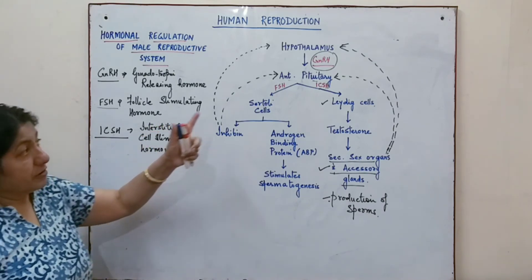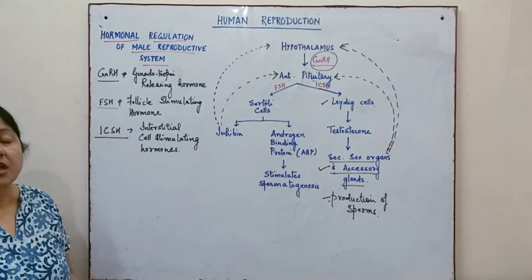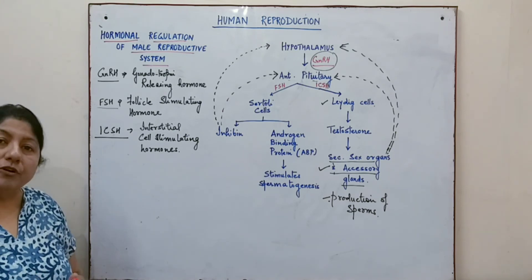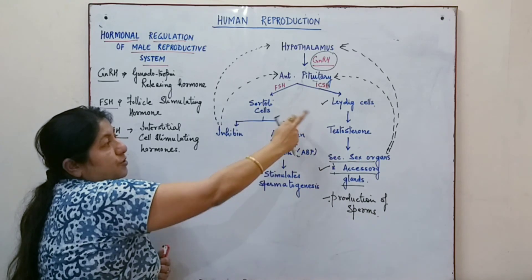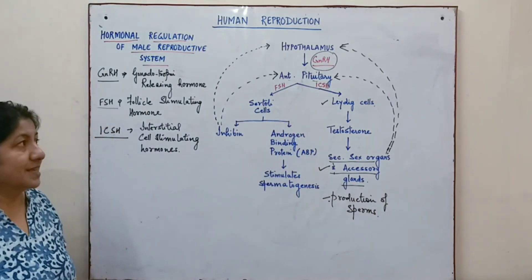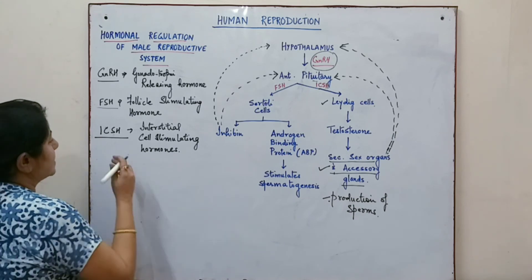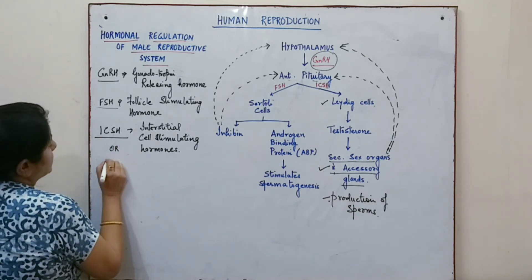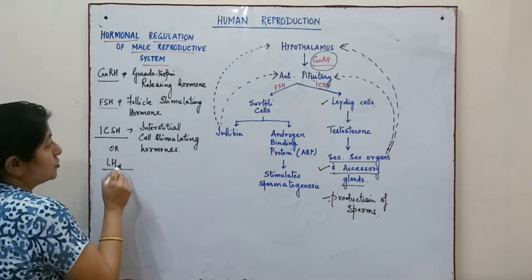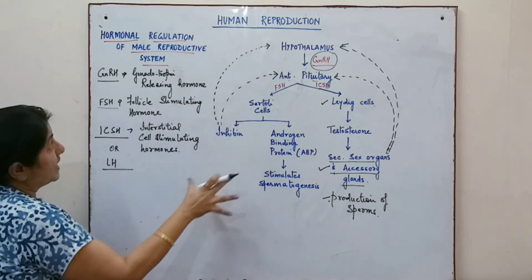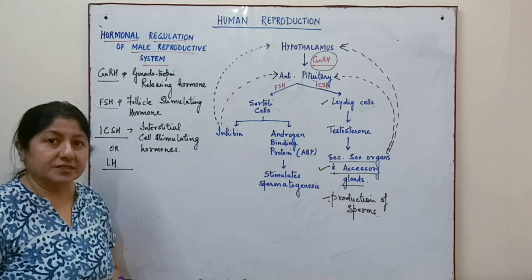So ICSH and FSH are the two major hormones playing an important role in regulating male reproductive function through the Sertoli cells and Leydig cells. ICSH is also known as luteinizing hormone, or LH, and this hormone helps to regulate the male reproductive system.